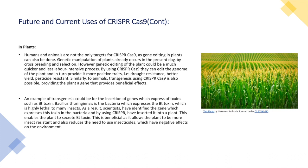By using CRISPR-Cas9, scientists can edit the genome of the plant and provide it with more positive traits — such as drought resistance, better yield, and pesticide resistance. Similarly to animals, transgenesis using CRISPR-Cas9 is also possible in plants, providing the plant a gene that gives beneficial effects. An example of transgenesis in plants could be the insertion of genes which express toxins such as Bt toxin.